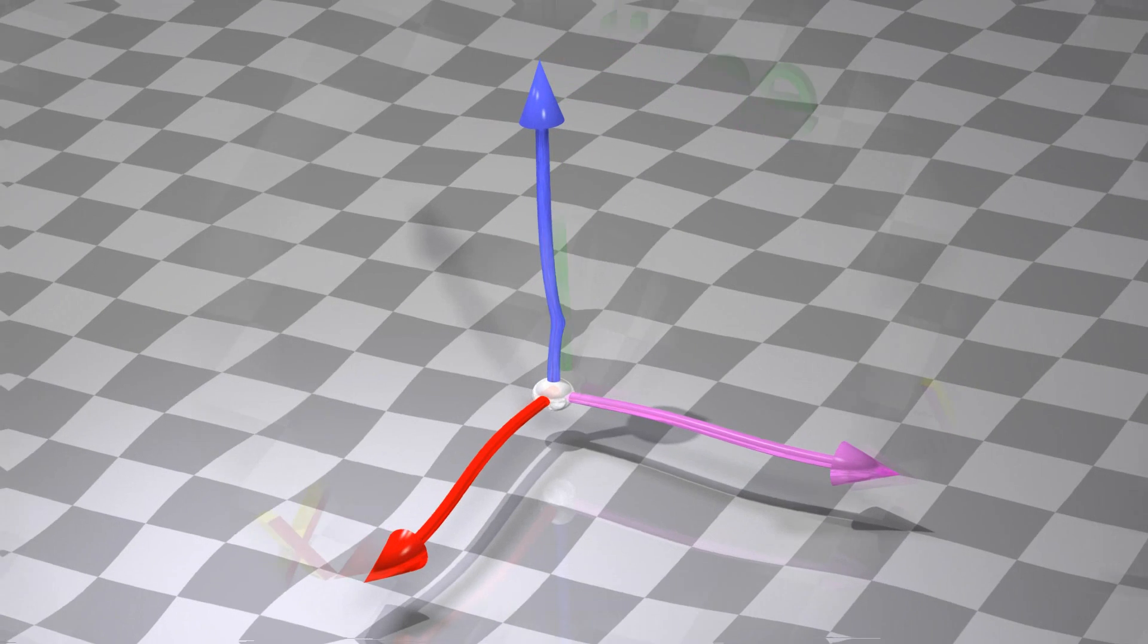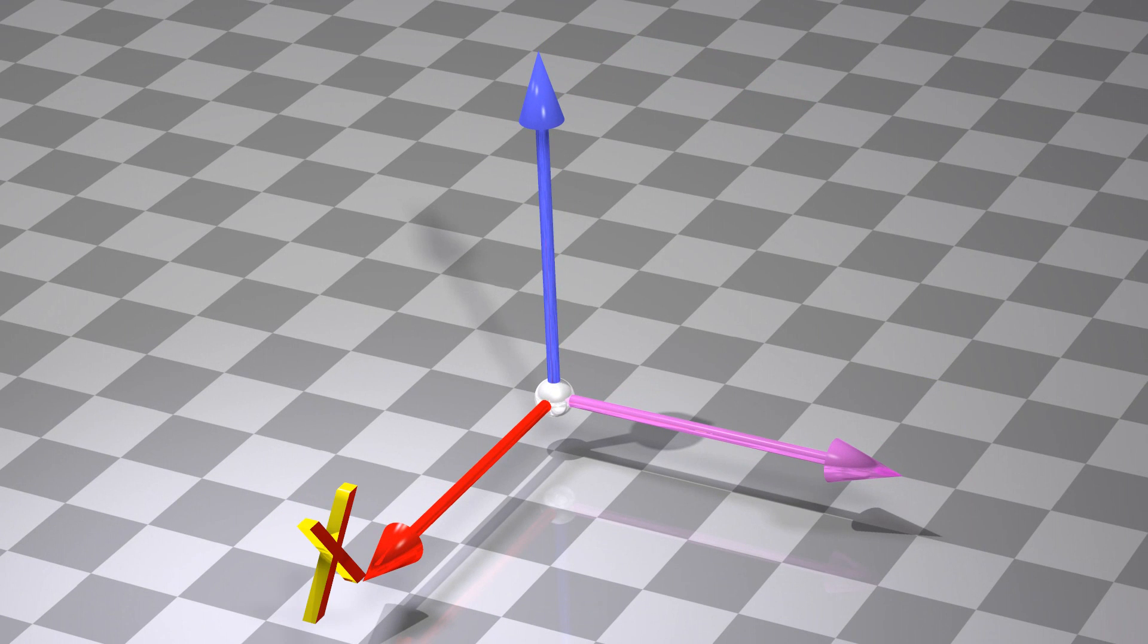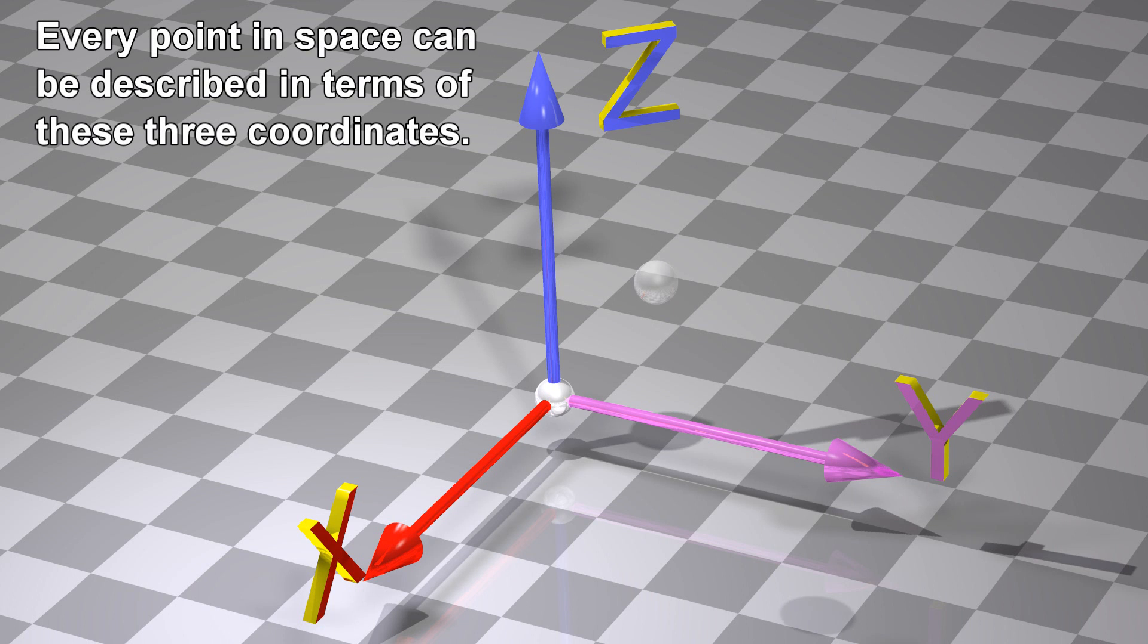We have three spatial dimensions which we can label as X, Y, and Z. Every point in space can be described in terms of these three coordinates.